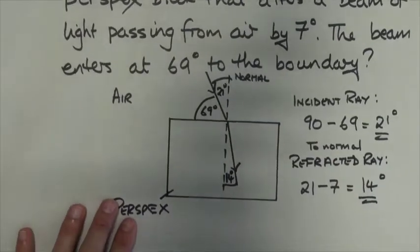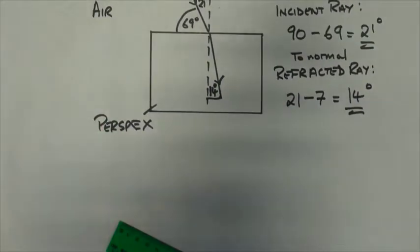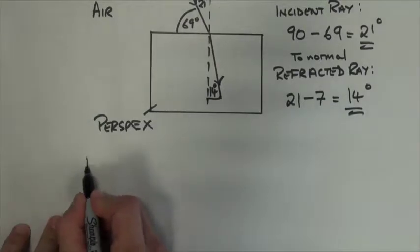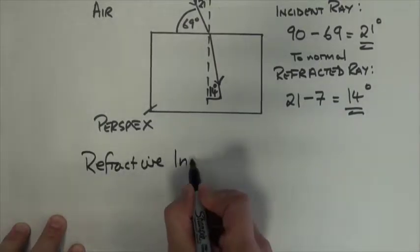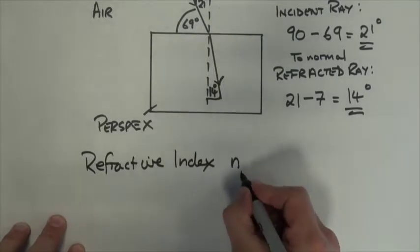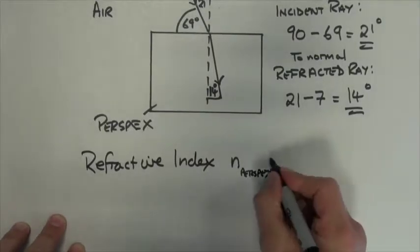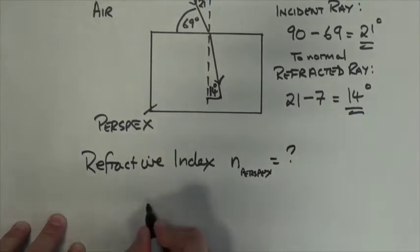So I've got my incident ray and I've got my refracted ray. Great. Now I can use Snell's law to find the refractive index. Now the refractive index of perspex is basically going to be n perspex. That's what I'm going to label it as. Now I don't know what that is, so I'm going to use Snell's law.